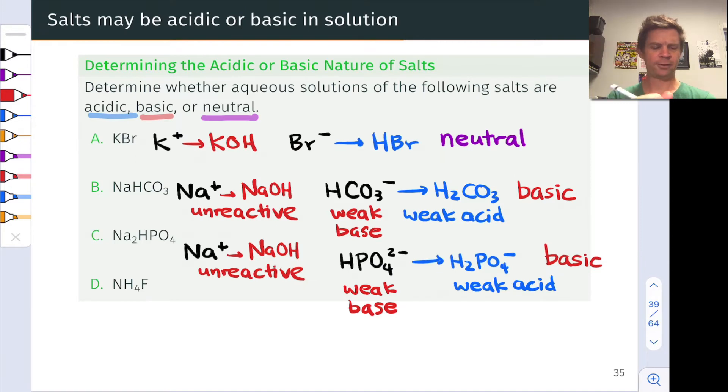Finally, we have NH4F here. NH4F is the NH4 plus cation and the fluoride anion. And here again, we have a really interesting case where NH4, when it loses a proton, produces NH3, which we know to be a weak base, and F minus, when it gains a proton, picks up a proton to form HF, which is also a weak acid.